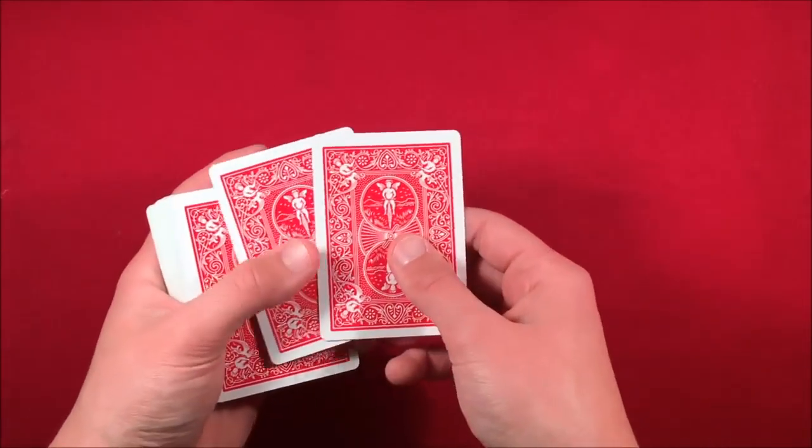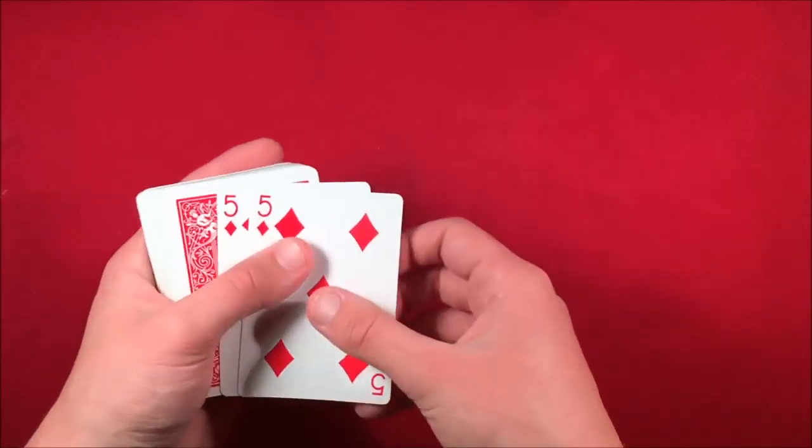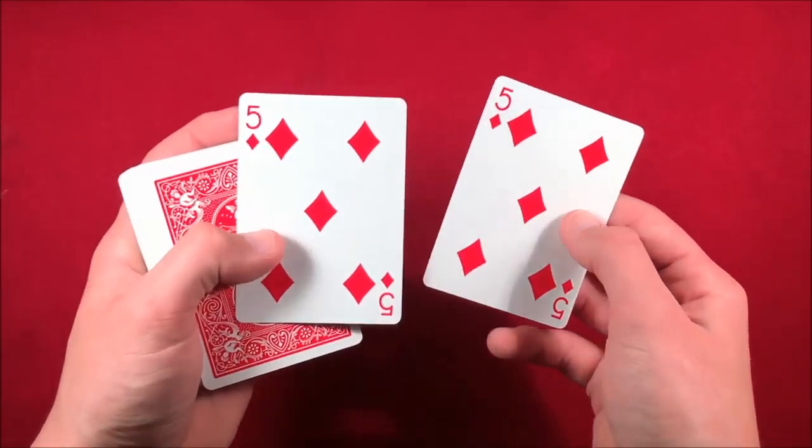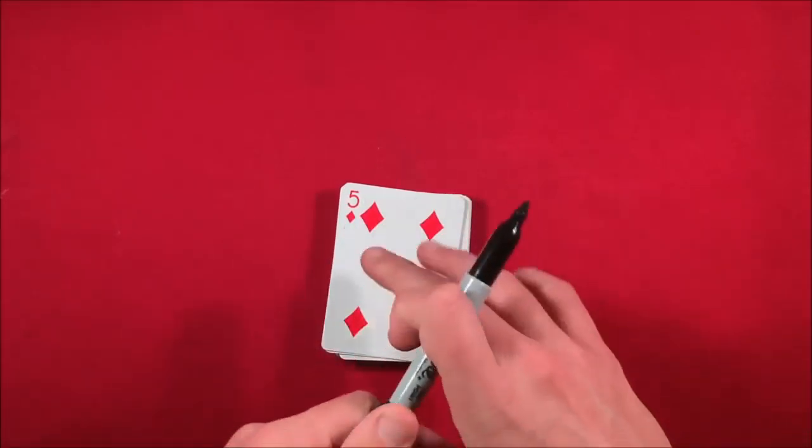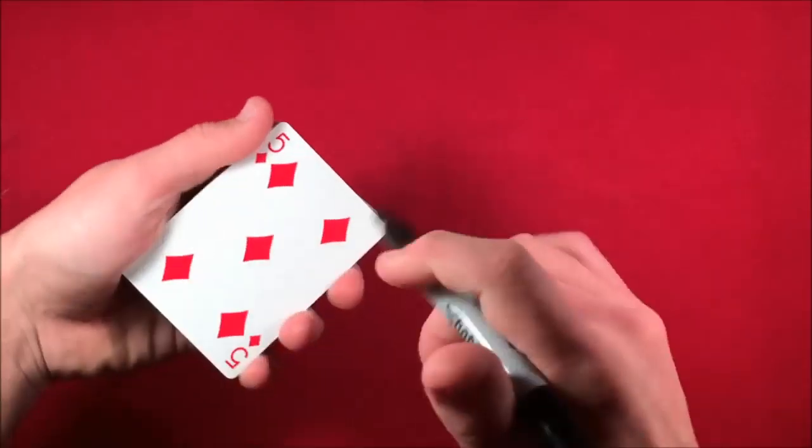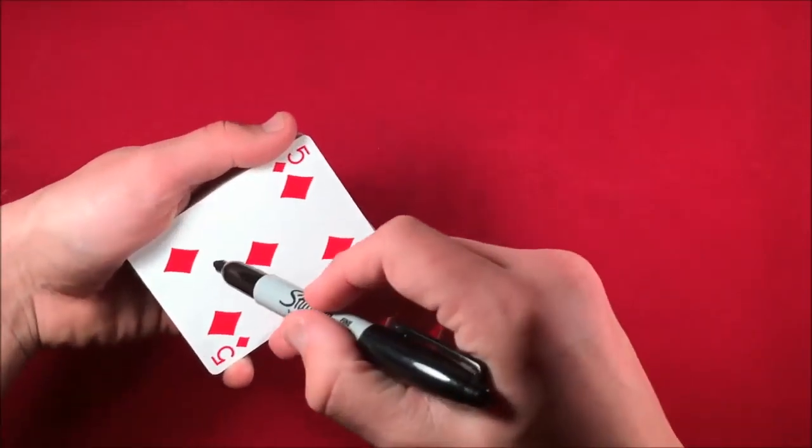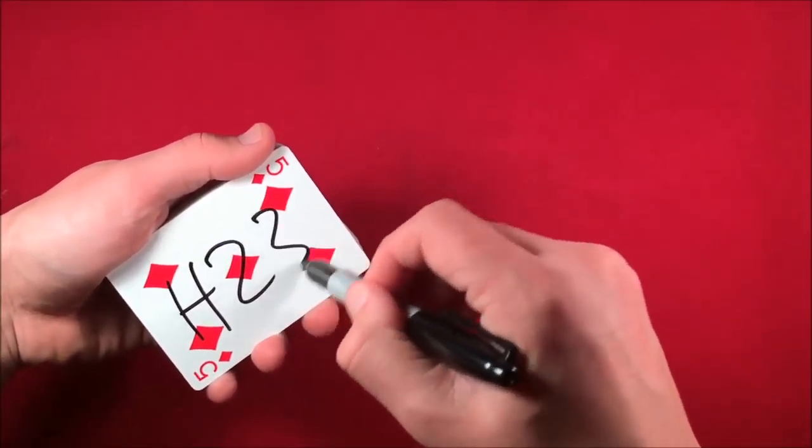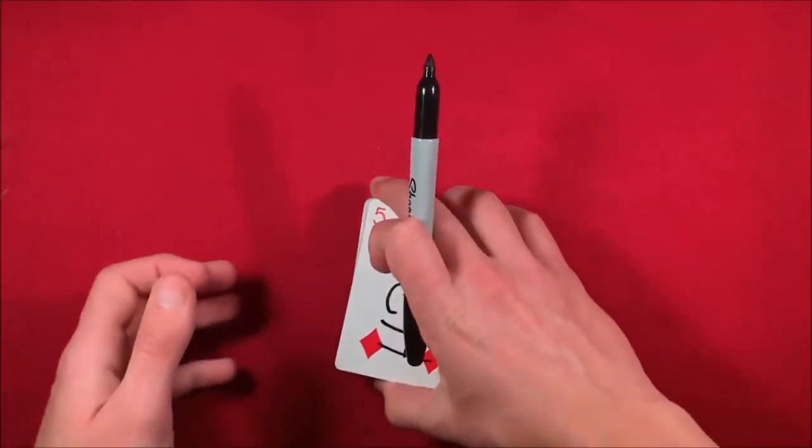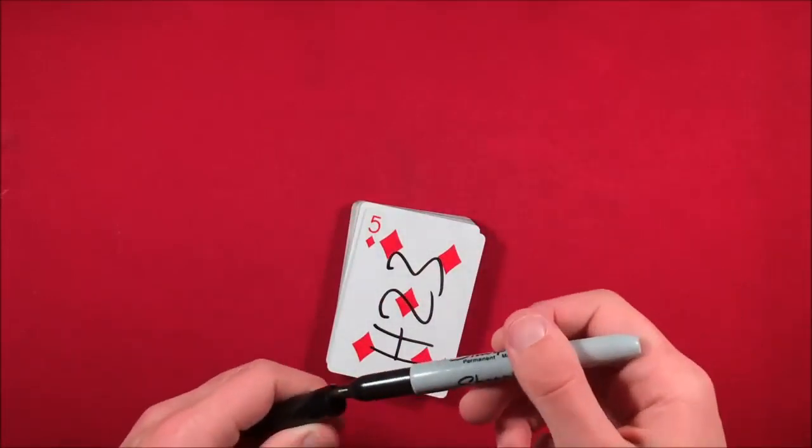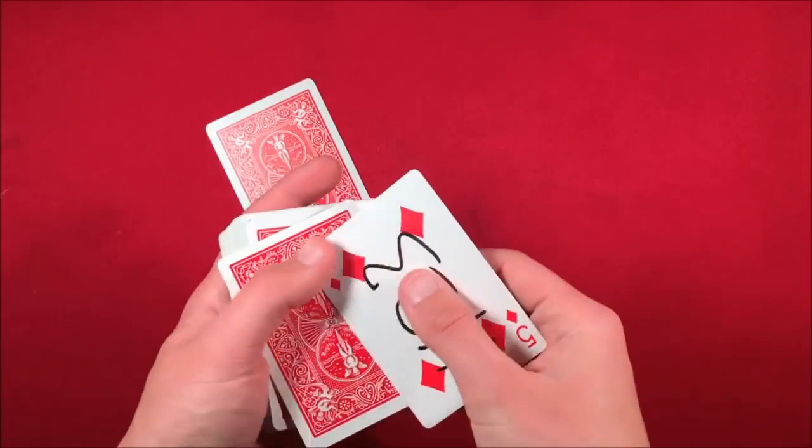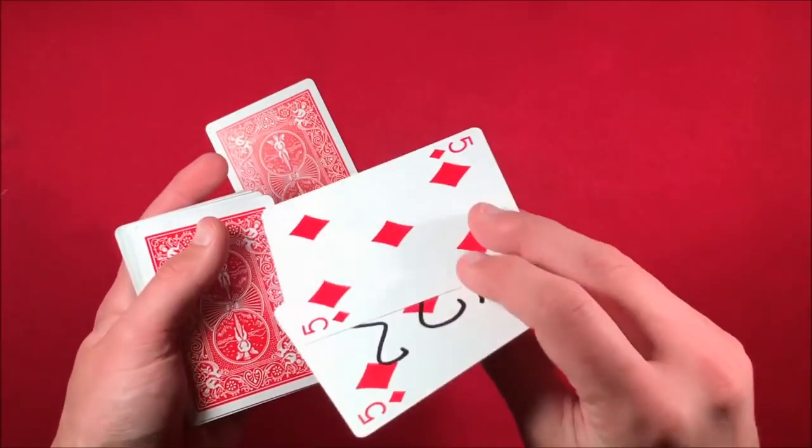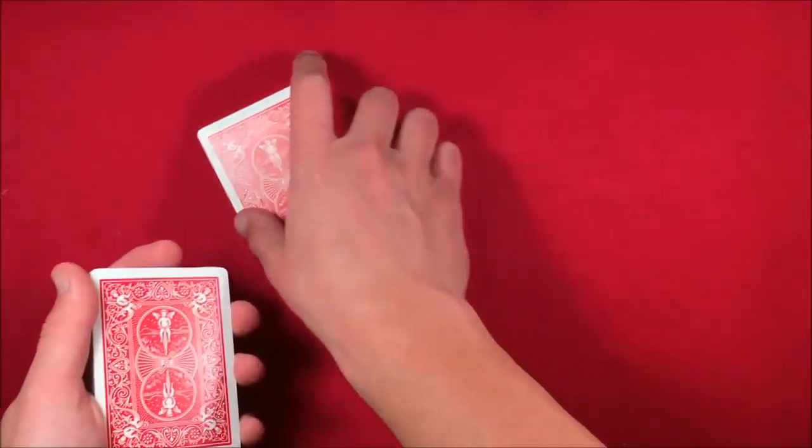The video starts kind of late, so I'm going into what he did before the video started so you can do the entire trick. You're going to need duplicate cards, and you have to be able to write your own signature and then duplicate it. Before you even start, you write a signature that you can easily replicate. In this case, I'm writing H23 on that card. The setup is the unsigned card, and then the signature one goes on top.